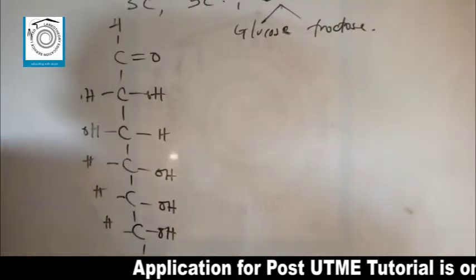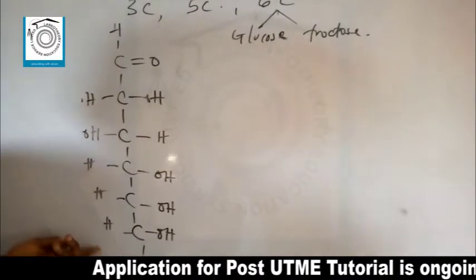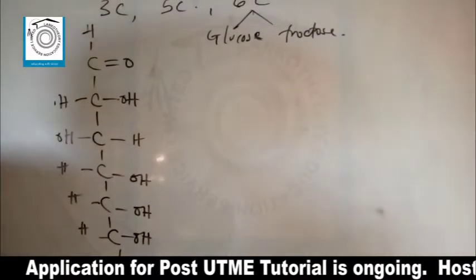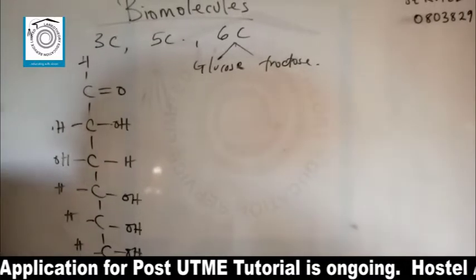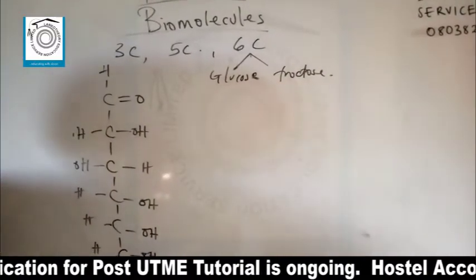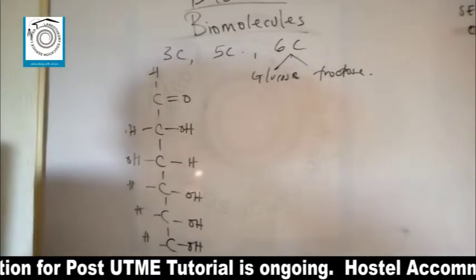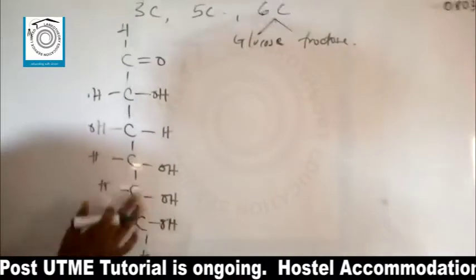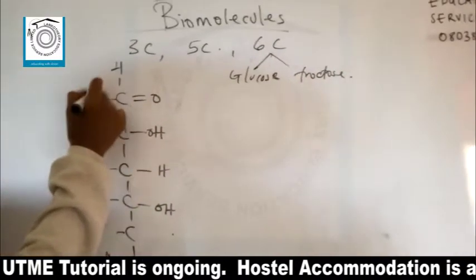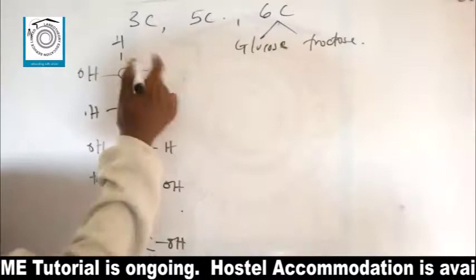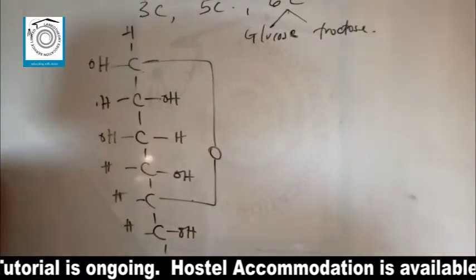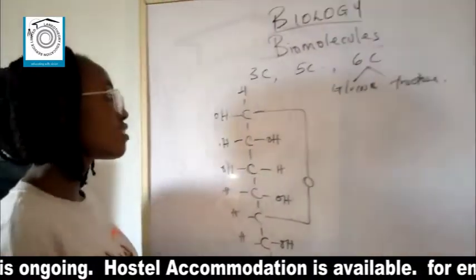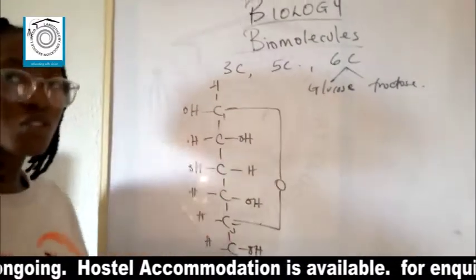To form a cyclic structure, the carbon atom carrying the functional group and the second-to-last carbon atom react together. That means this carbon atom reacts with the second-to-last one to form a cyclic structure. The OH from the second-to-last moves to the first one, the bond breaks, combining oxygen to form the ring — a C1 to C5 reaction giving the cyclic structure.